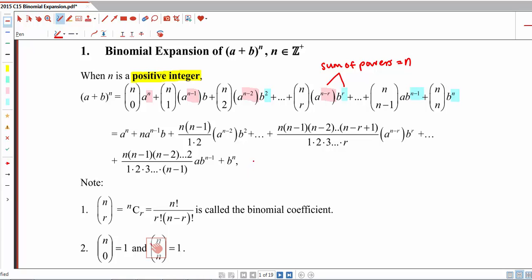In short, a plus b to the power of n can be rewritten as a summation from r equals 0 to n of n choose r, a to the power of n minus r, b to the power of r for positive integers of n. Now from here, we can also see that this will give us the r plus 1 term or general term of our binomial expansion.